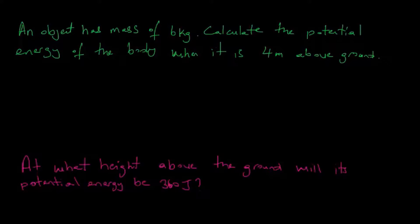An object has mass of 6 kilograms, and part one says we should calculate the potential energy of the body when it is 4 meters above ground. So first of all, you might ask yourself, what is potential energy?